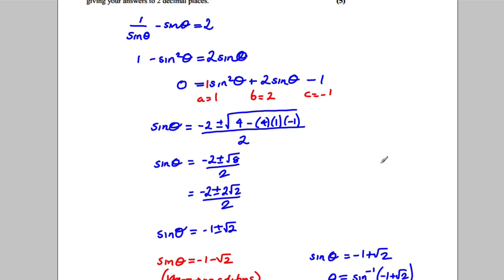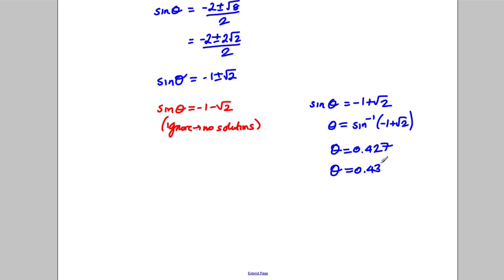And we want our answers between zero and π. Now you should know what the sine graph looks like. So the sine graph looks like this. And so if there's an answer 0.43 from zero, there'll be another answer here, which is 0.43 back from π here.